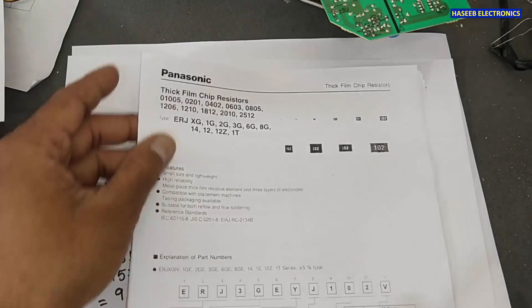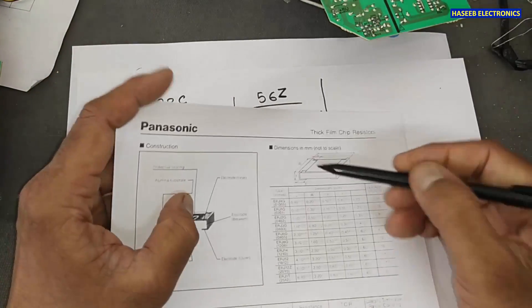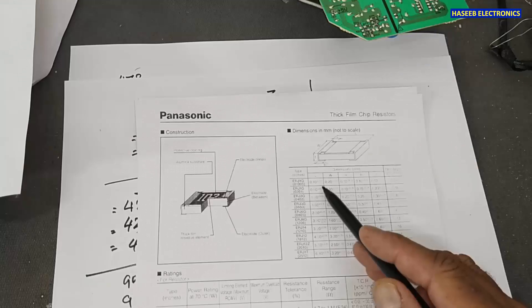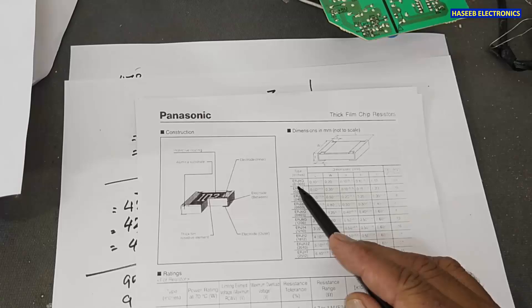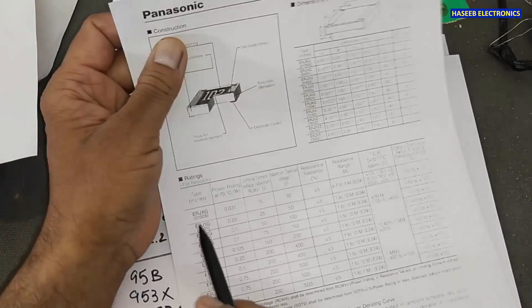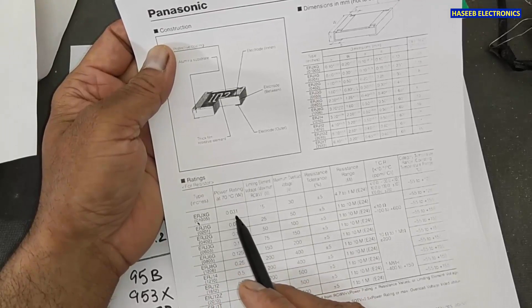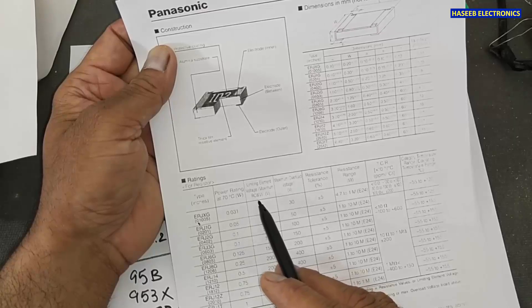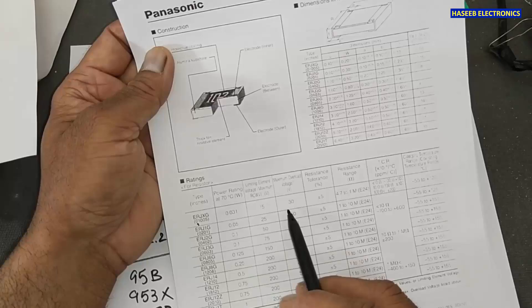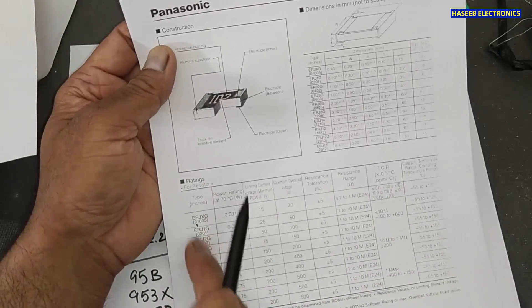If we check these Panasonic resistors, in the same way, we will take length, width and height. Locate the model number for that resistor. For example, the package code is 01005. We will come here 01005. Power rating 0.031. Element maximum voltage 15 volt. Maximum over voltage 30 volt. So the remaining data we will find from this code.